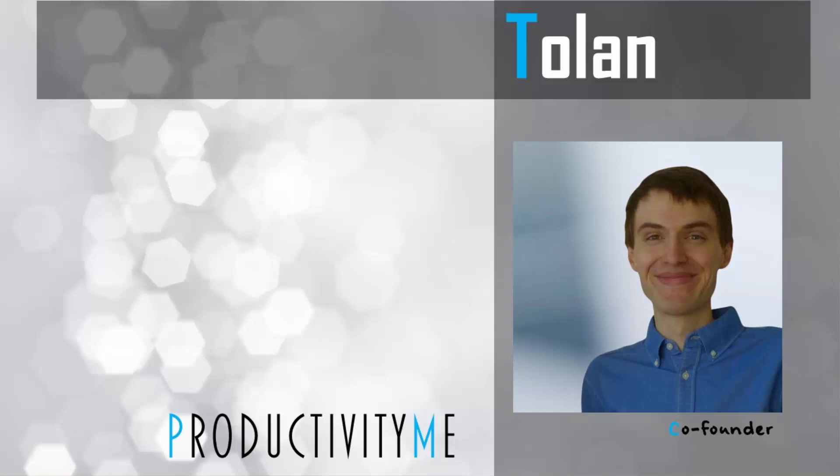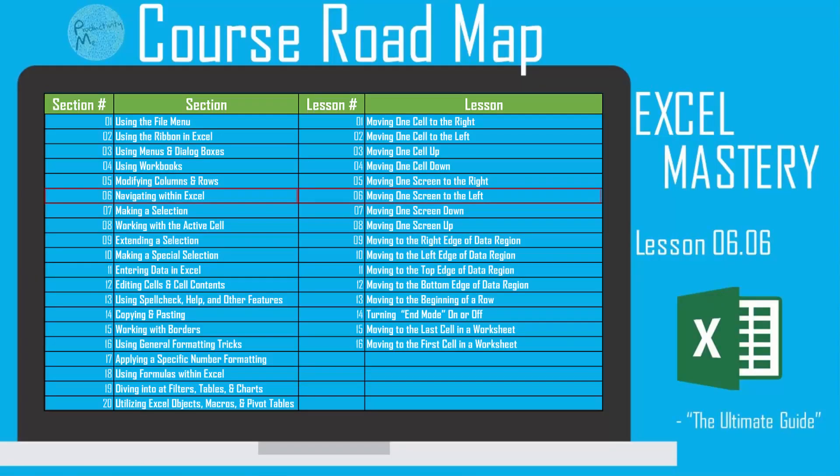Hi, and welcome! My name is Tolan, and I'm the co-founder of ProductivityMe. In this video, we're going to look at the keyboard shortcut of Alt Page Up, which will allow us to automatically move to one screen on our left. So, with that, let's get started.